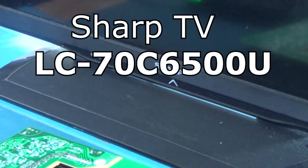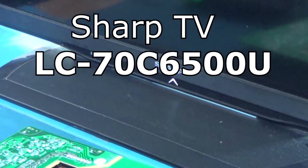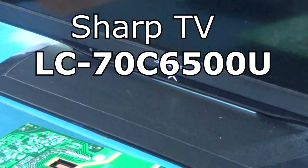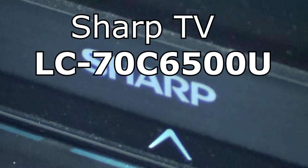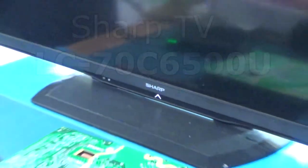Okay, so I got this 70 inch Sharp TV and as you can see we have a 3-1 blink code. Three short, one long, however you want to say it. But we're going to determine if it's either the power supply board or the main board, and in this video I'm going to show you how.